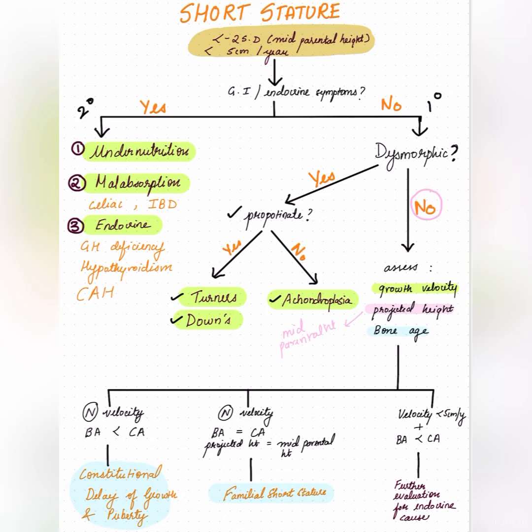If growth velocity is normal and bone age is less than the chronological age, the child is growing normally but is developmentally younger and hasn't hit the growth spurt yet. This pattern indicates constitutional delay of growth and puberty.